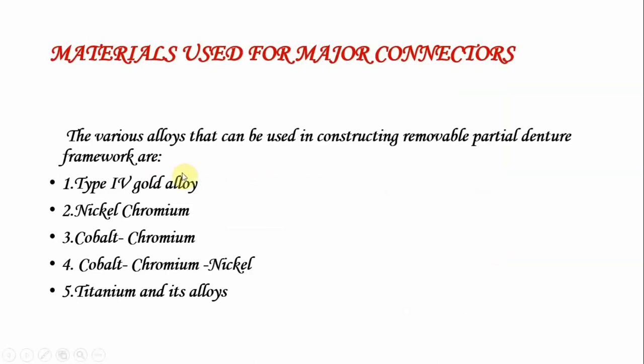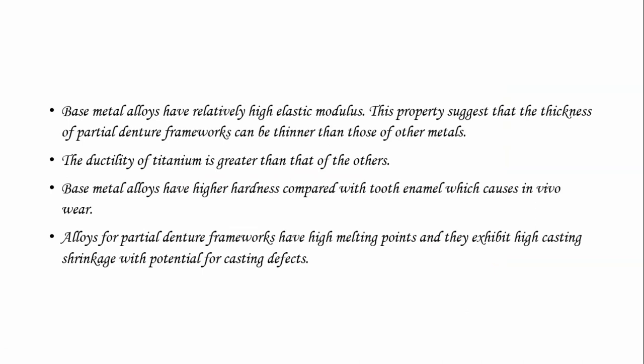Materials used for major connectors include Type 4 gold alloy, nickel-chromium, cobalt-chromium, cobalt-chromium-nickel, and titanium and its alloys. Base metal alloys — cobalt-chromium and nickel-chromium — have relatively high elastic modulus, allowing thinner framework construction. The ductility of titanium is greater than that of the others. Base metal alloys have higher hardness compared with tooth structure, which causes in vivo wear. These alloys have high melting points and exhibit high casting shrinkage with potential for casting defects.